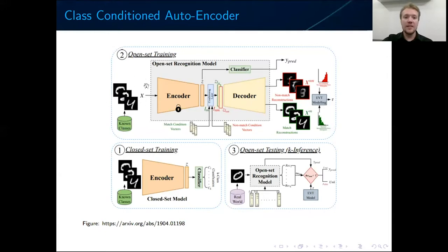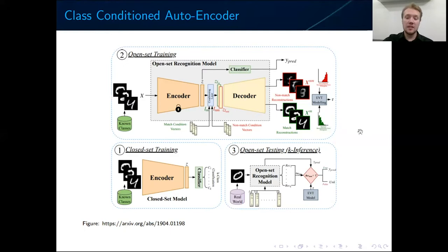We also give the input with a non-matching label — a label corresponding to some other class — and we expect it to reconstruct some rubbish, resulting in high reconstruction error. During inference, we give it an input, feed it to the classifier, the classifier gives us some class, and then we feed that input to the autoencoder with the label predicted from the classifier. If the reconstruction error is low, we conclude it is a known class; if the reconstruction error is high, we conclude it is an unknown sample. Our solution is roughly based on this idea.